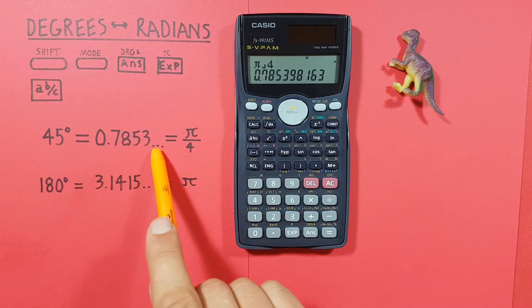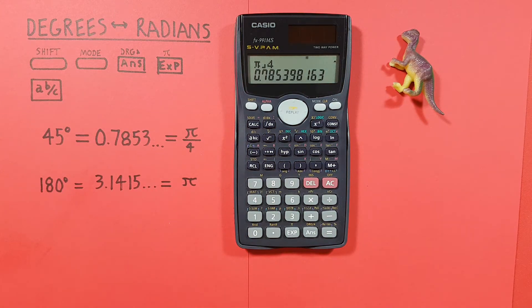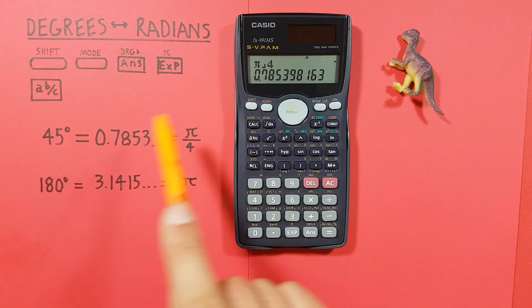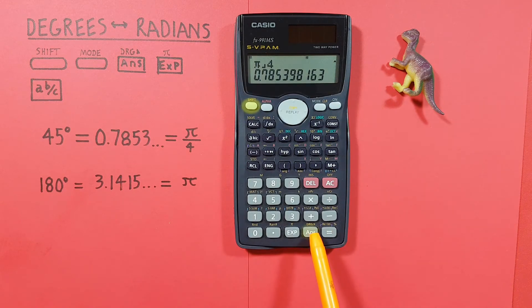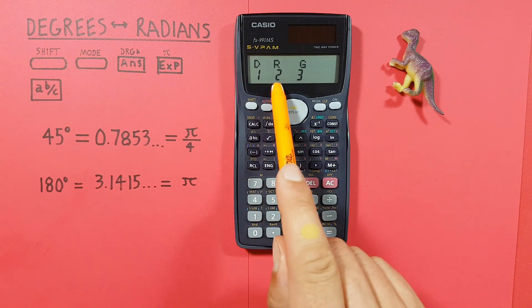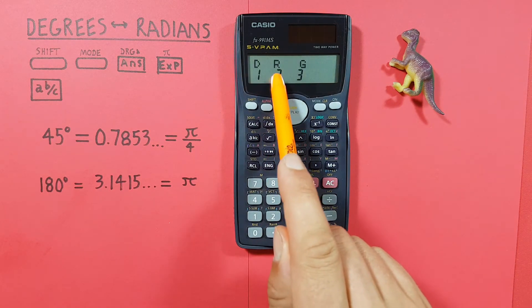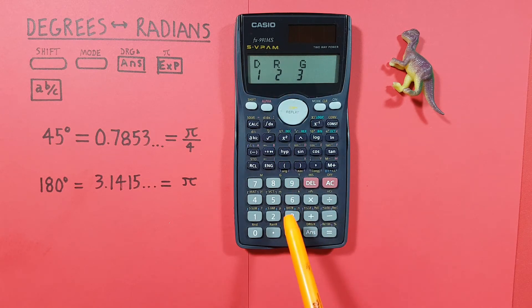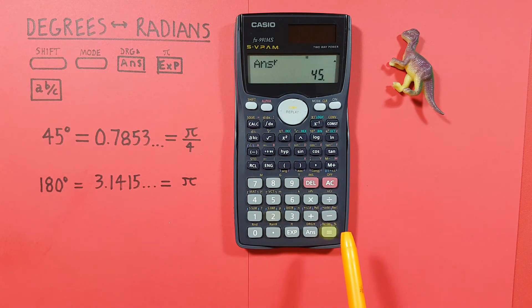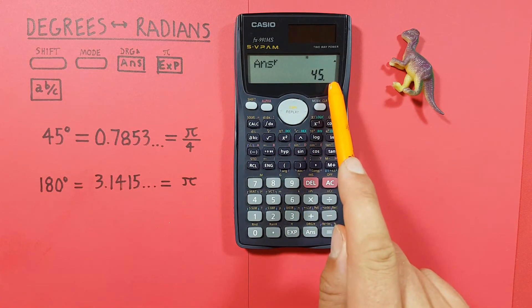And if we want to convert this to degrees, we press shift, answer, and then tell our calculator these are radians, so we choose number 2, and press equals, and see we get a result of 45 degrees.